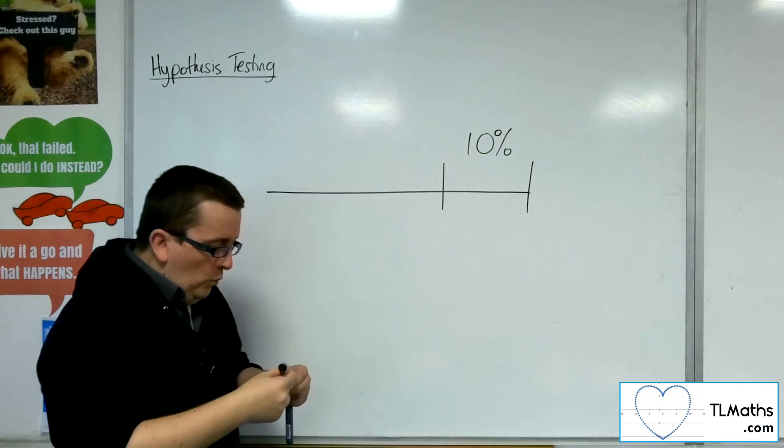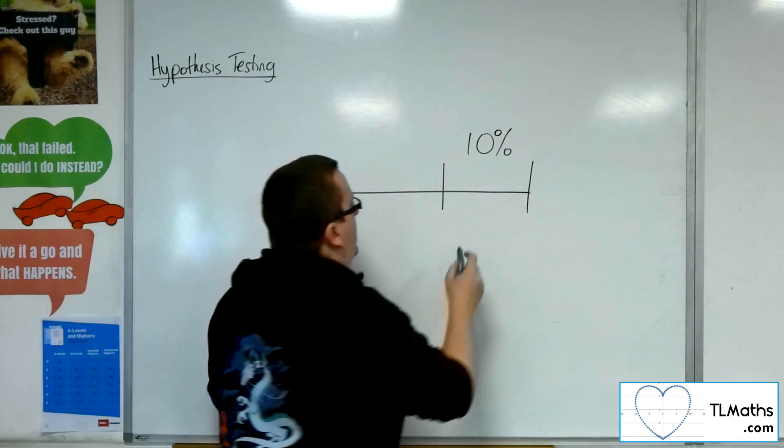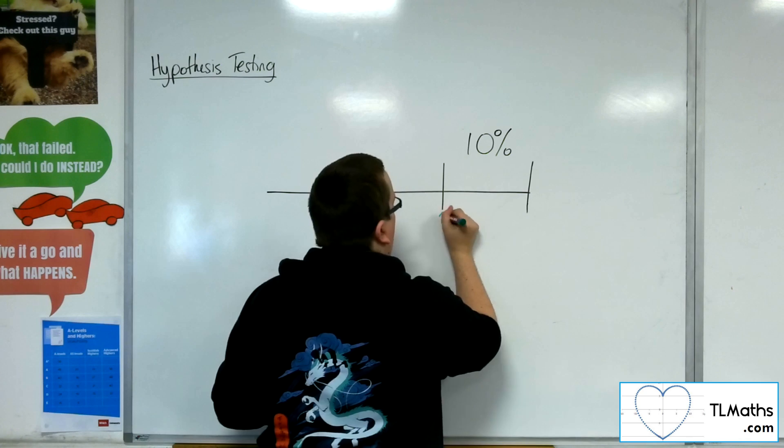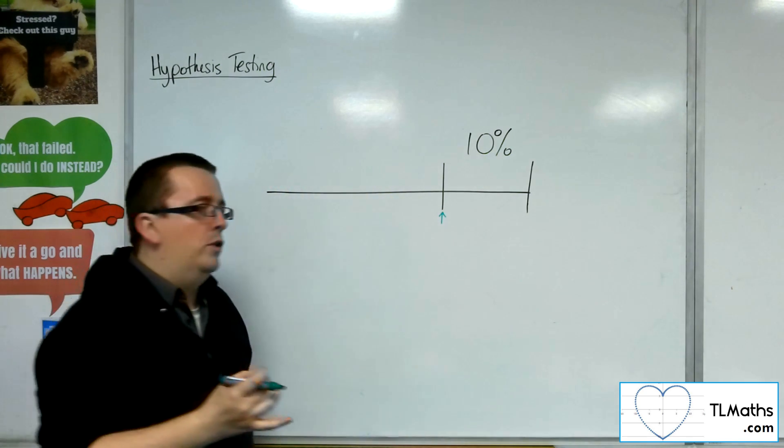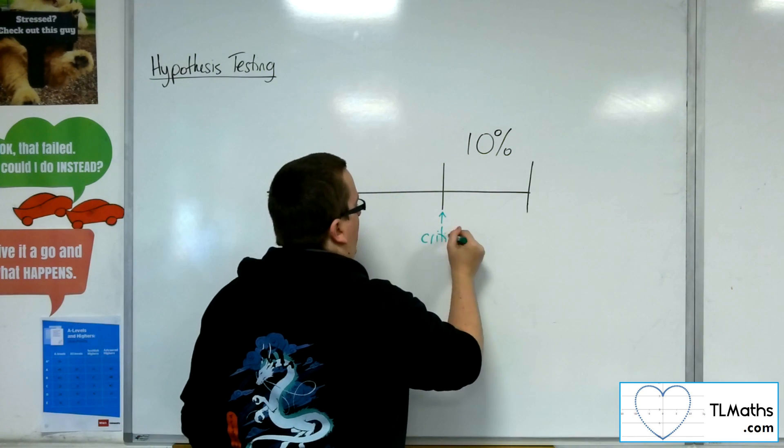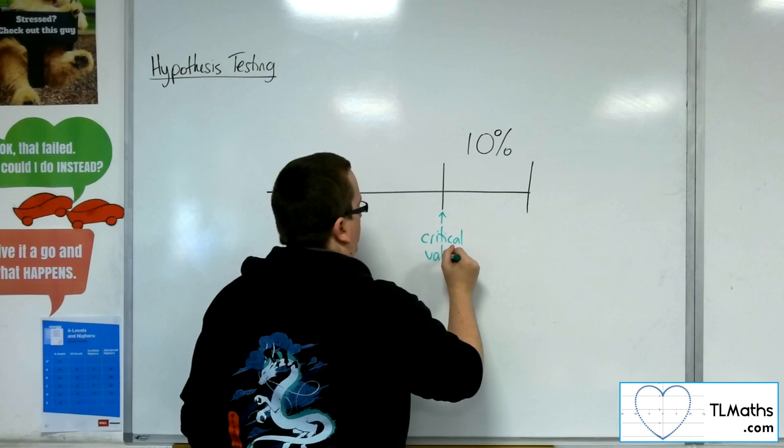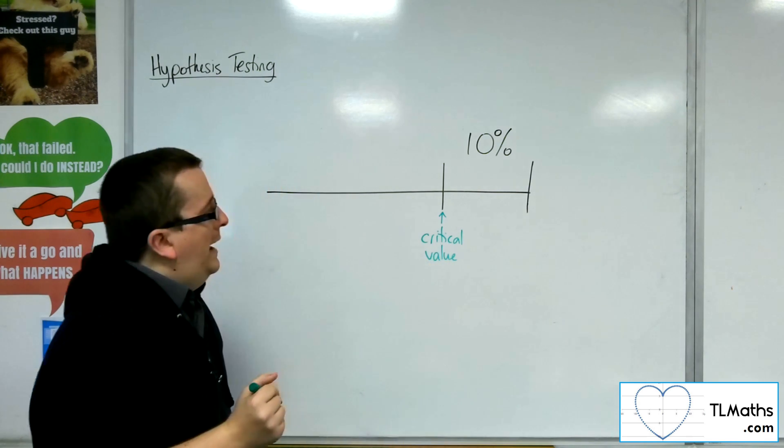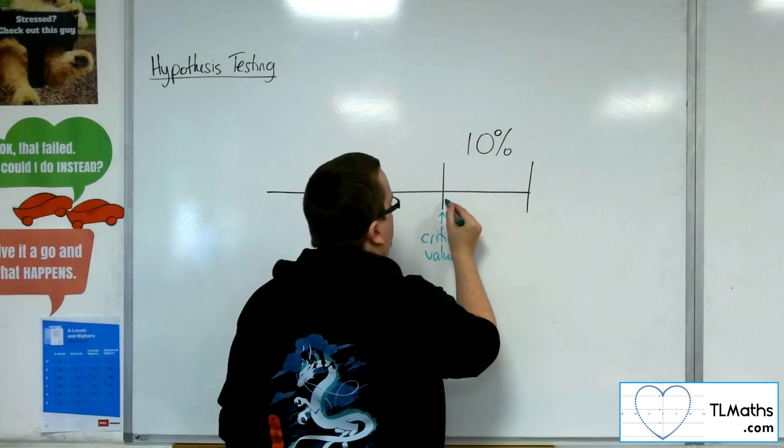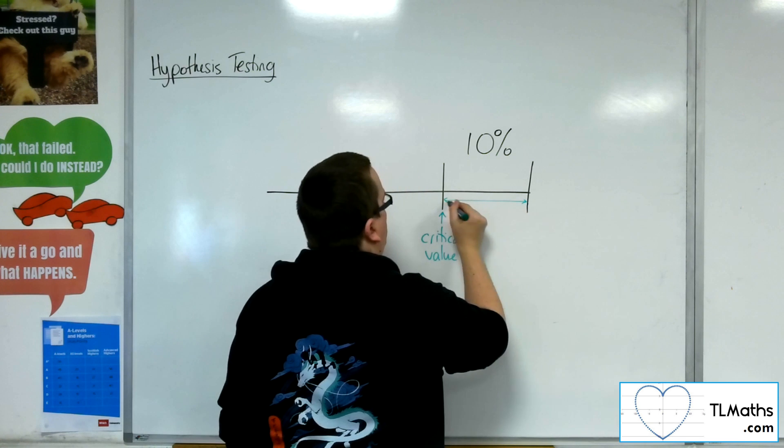Now, what we refer to is that this value here, that value that is on the boundary, we refer to that as the critical value. And this region here is the critical region.